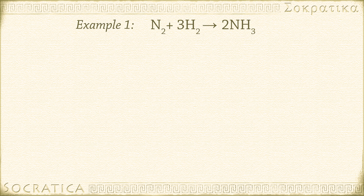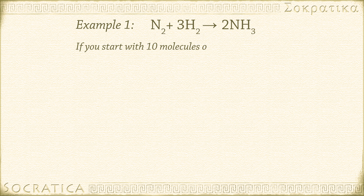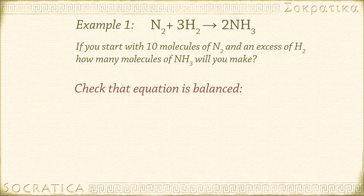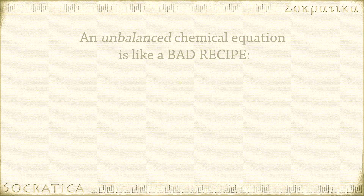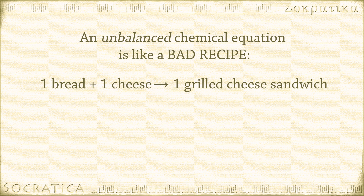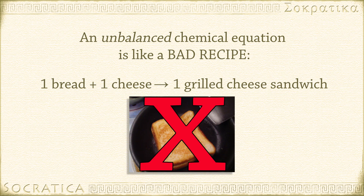Now let's try a stoichiometry problem using a balanced chemical equation. The balanced chemical equation will be just like our recipe: N2 + 3H2 → 2NH3. If you start with 10 molecules of N2 and have an excess of H2, how many molecules of NH3 will you make? Check that your equation is balanced by counting atoms on each side. On the left: 2N and 6H. On the right: 2N and 6H — it's balanced. If your equation isn't balanced, you have to balance it first, or stoichiometry won't work. It would be like a bad recipe — like starting with one piece of bread and expecting two pieces to magically appear in your finished sandwich. You can't create bread and cheese out of nothing, and the same goes for chemical reactions.